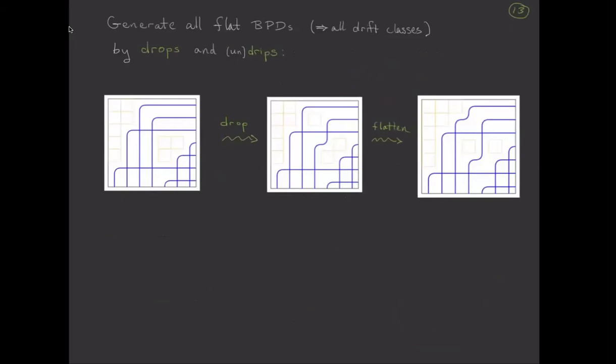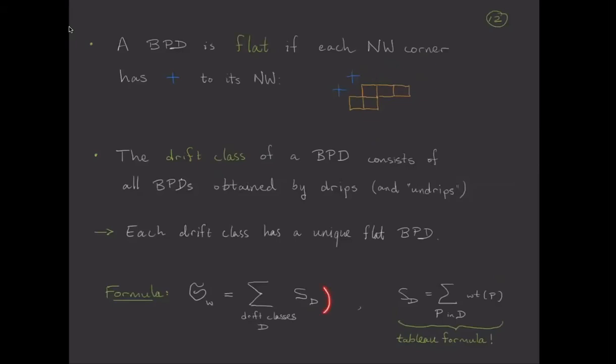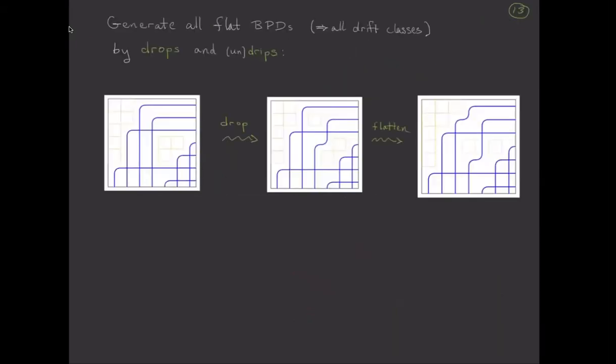So one question about this is for this kind of formula to be useful, you'd need to have a way of figuring out how to get all of the drift classes or equivalently how to get all of the flat bumpless pipe dreams. And you can generate all the flat bumpless pipe dreams by starting with the Rotha pipe dream and doing a sequence of drop moves and undrips. So you drop and what you end up with might not be flat. So then you flatten it. It's a little lemma that says that this kind of composed procedure—start with the Rotha diagram, drop and flatten in all possible ways—you get all possible flat diagrams and therefore you generate all drift classes.